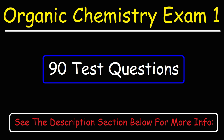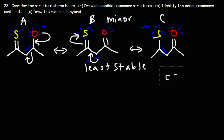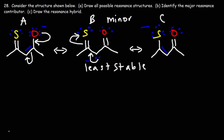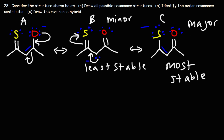Let's get back to the problem. Atoms that are large can better stabilize the negative charge than smaller atoms. So the most stable structure is going to be structure C, where the negative charge is on a sulfur atom. Therefore, structure C represents the major resonance contributor.